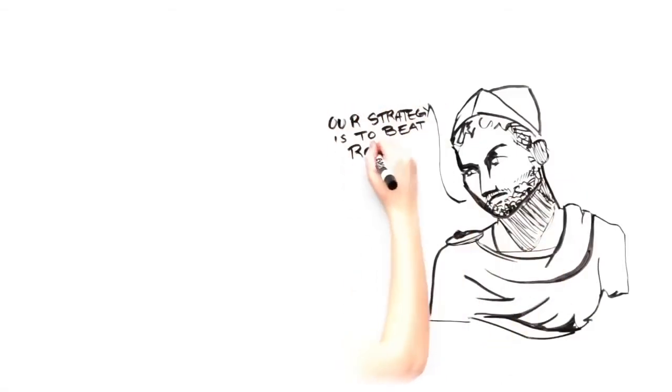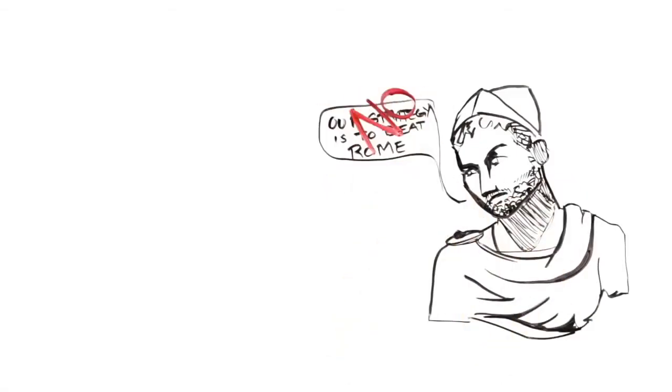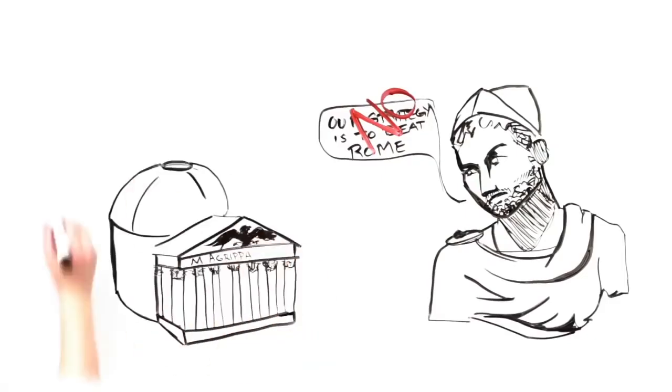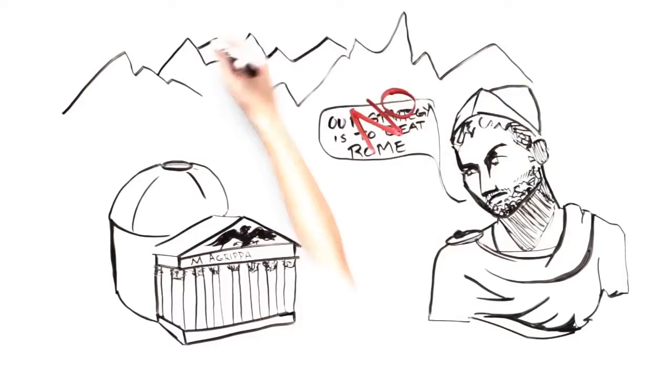Can you imagine the great Hannibal saying something like, our strategy is to beat Rome? No, Hannibal's goal was to defeat Rome. His strategy was to bring hidden strengths against the weaknesses of his enemy at the point of attack to achieve that goal, such as crossing the Alps when the enemies did not believe he could.